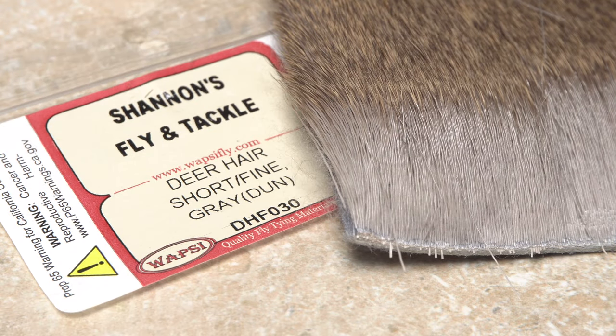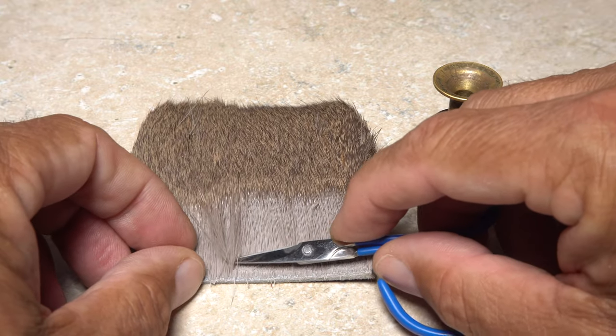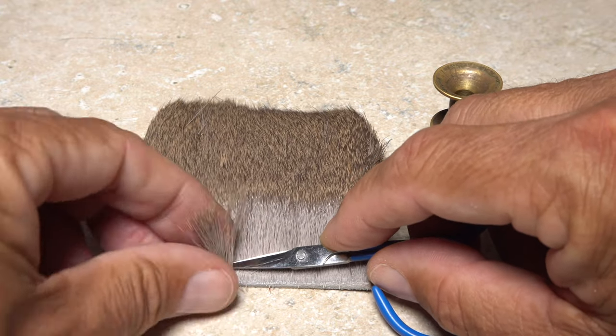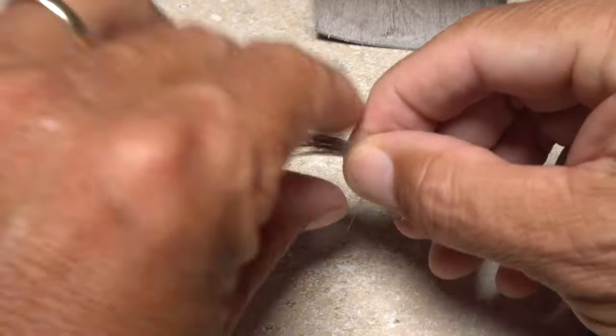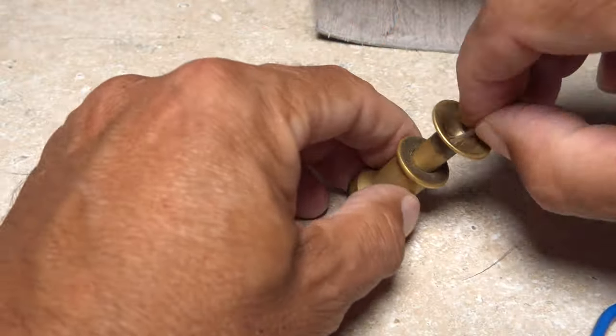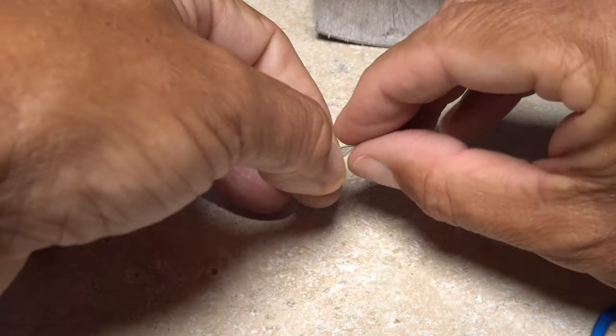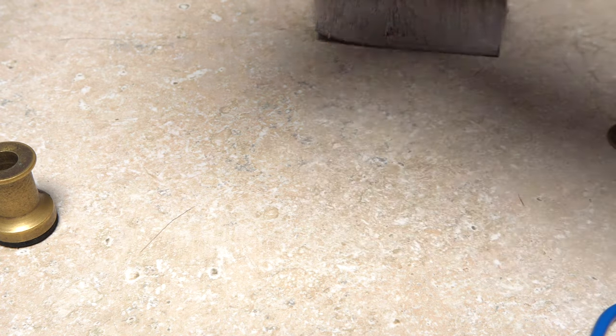Comparadun or short, fine, dun-colored deer hair is used to form the wing and the head of the fly. Snip a small clump free from the hide and as you did with the moose body hair, first get rid of the under fur, then give the clump an ample stacking. Here too, remove the clump with the tips pointing toward the rear of the fly.